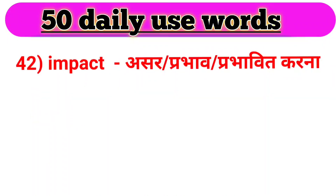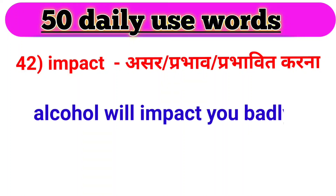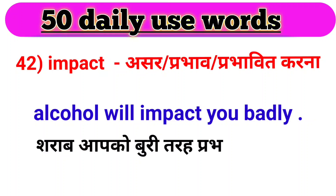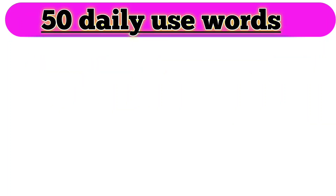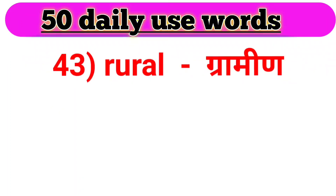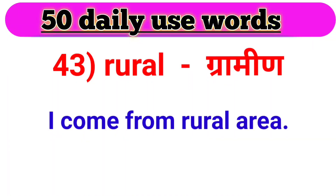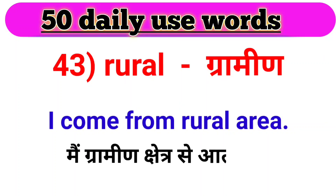Agla word hai — impact. Impact ka matlab hota hai asar ya prabhav ya prabhavit karna. For example: Alcohol will impact you badly. Sharaab aapko buri tarah se prabhavit karega. Next word, we have rural. Rural ka matlab hota hai graameen. For example: I come from a rural area. Main graameen kshetra se aata hoon.